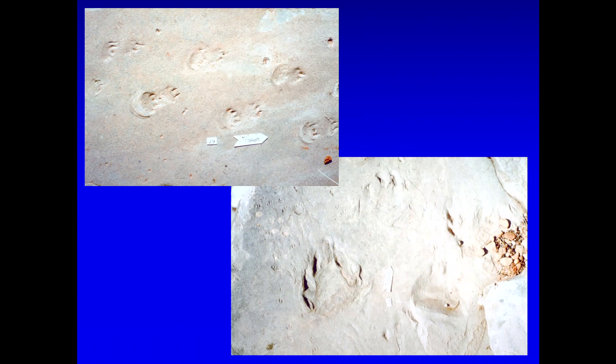And so here are some trackways. There's a very nice one along the top. Clear toe marks, clear toe prints. The bottom one, they're bigger tracks. They're not as clear, but they still have toe marks. So these details are commonly found in those tracks.